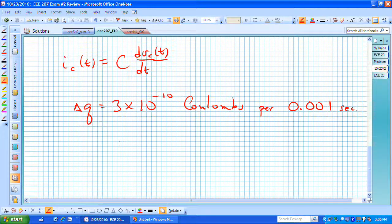And that's really telling us our current that's flowing in the capacitor. Our current is this amount of charge per unit length of time and in this case it's 3 times 10 to the minus 10th all divided by 1 times 10 to the minus 3 or that gives us 3 times 10 to the minus 7.